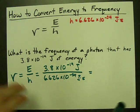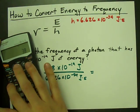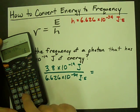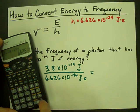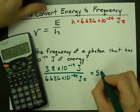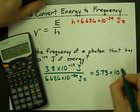And when you do that on your calculator, you get 3.8 times 10 to the power of negative 19 divided by 6.626 times 10 to the power of negative 34. I get 5.73 times 10 to the power of 14.